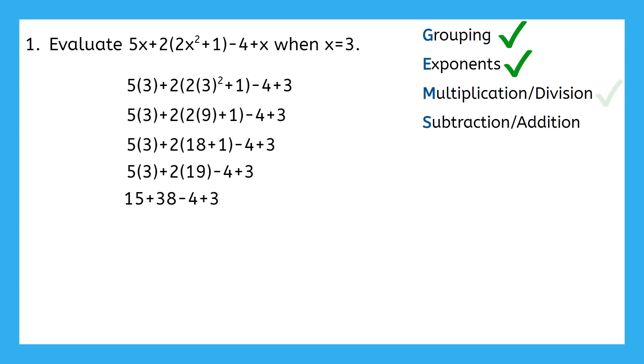Now all that's left to take care of is subtraction and addition from left to right. 15 plus 38 is 53, and we bring the rest down. Then 53 minus 4 gives us 49, and we bring the rest down. Finally, 49 plus 3 gives us 52. And there's nothing left to bring down. We have our final answer.